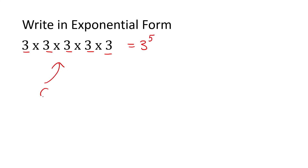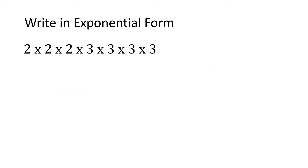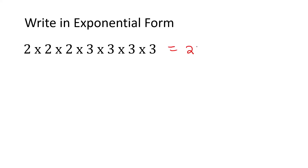Remember, this is expanded, and this we call exponential. Why? Because it has an exponent. Now look at this one: there is the number 2, 3 times, and the number 3, 4 times. So that gives us 2 to the power of 3 times 3 to the power of 4.